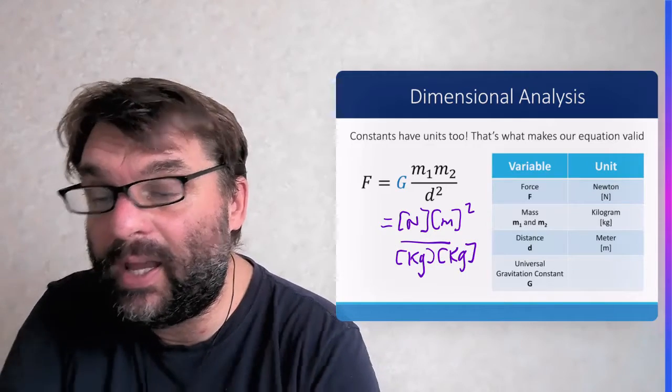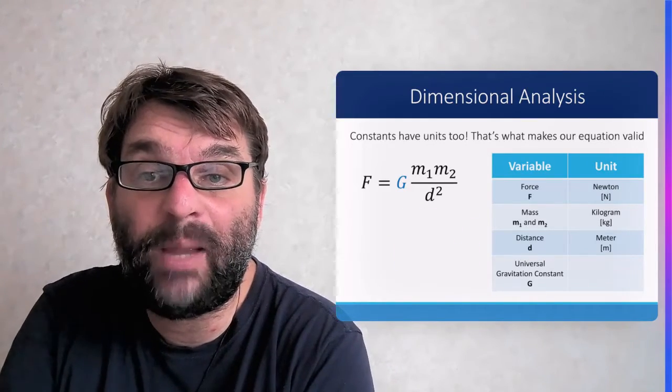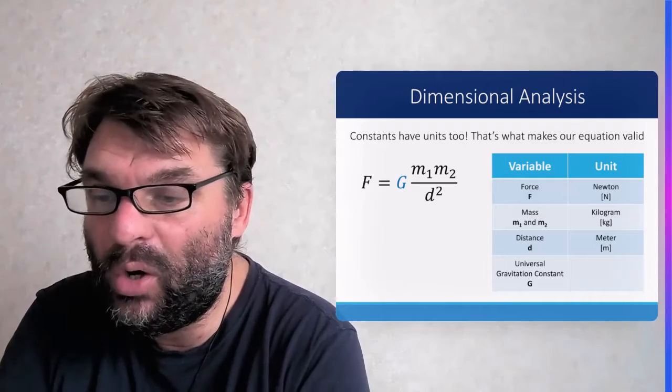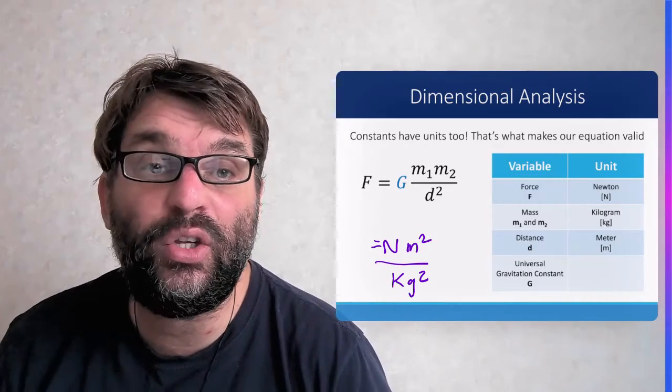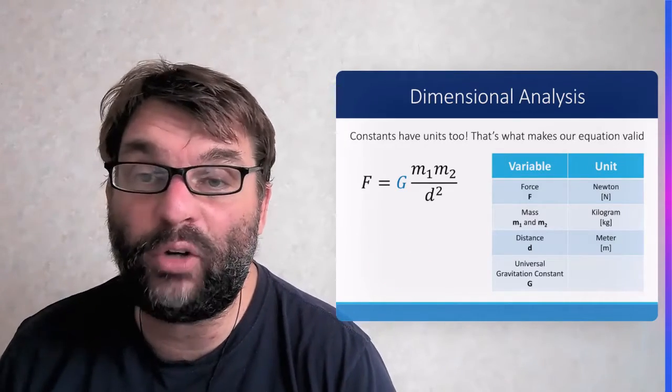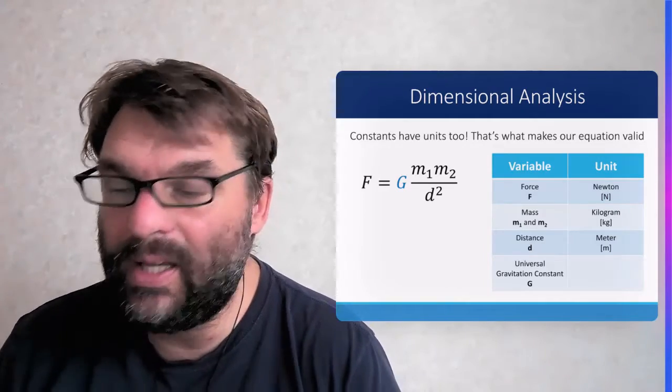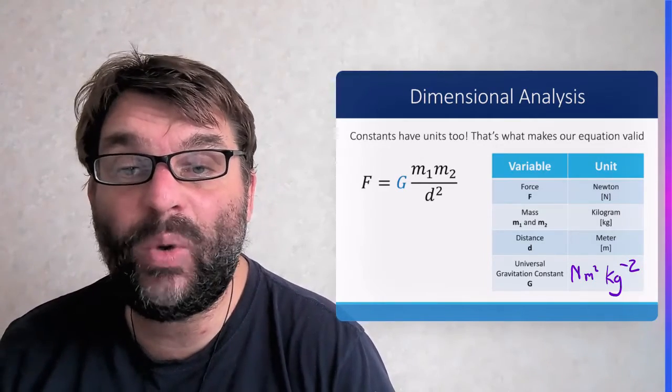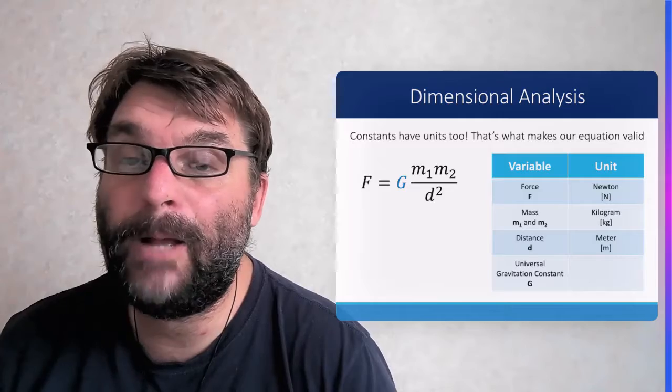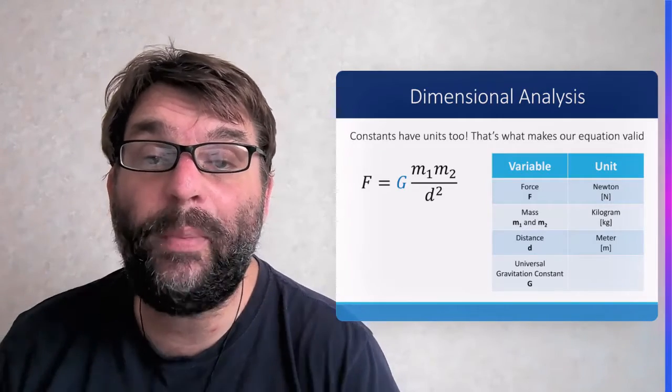And then we will divide that by the units of kilograms times units of kilograms, or kilograms squared. So our unit for our gravitational constant capital G is going to be newton meters squared divided by kilogram squared.